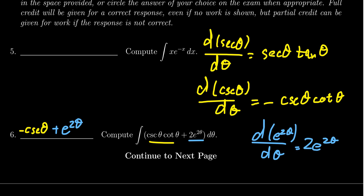Don't forget your constant, you do need that plus c for full credit. And then we get that the answer would be negative cosecant theta plus e to the two theta plus c.